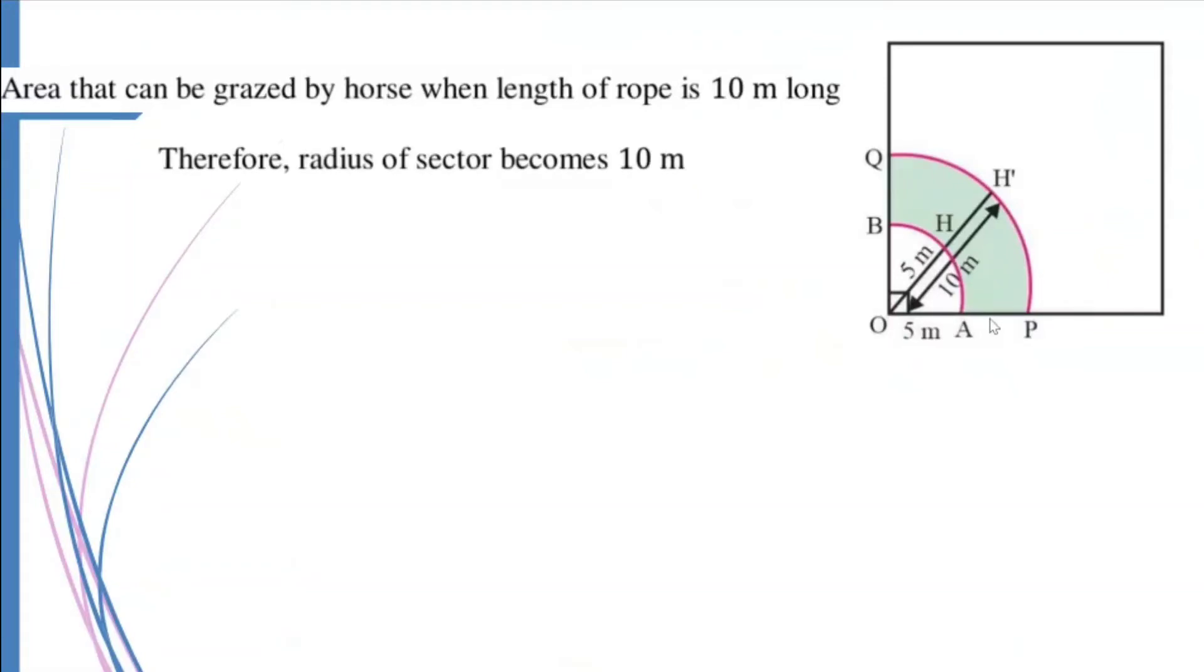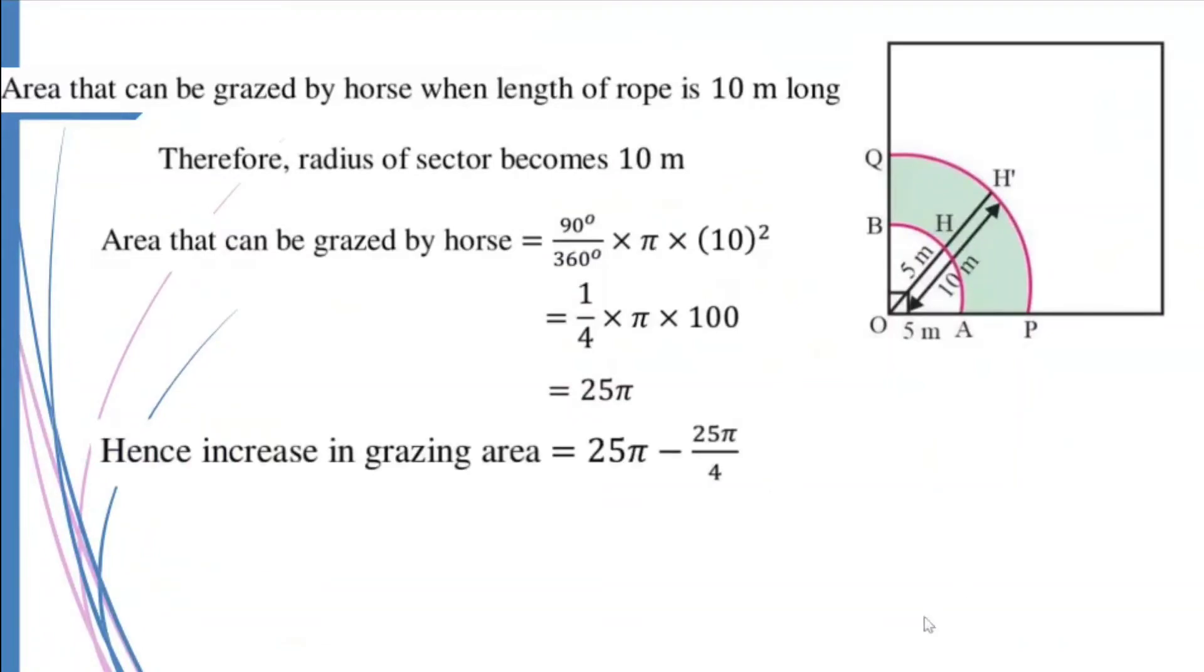The radius of the sector now becomes 10 meters and the area that can be grazed by the horse now becomes 90/360 × π × 10². Letting π be as it is, I get the answer as 1/4 × π × 100, which is equal to 25π. So the area increased is how much? The increase will be equal to 25π - 25π/4, which is equal to 3/4 × 25π, which is equal to 3.14 × 25 × 3/4, which is equal to 58.875 meters squared.